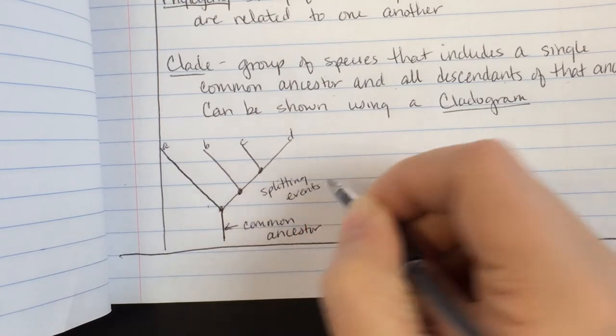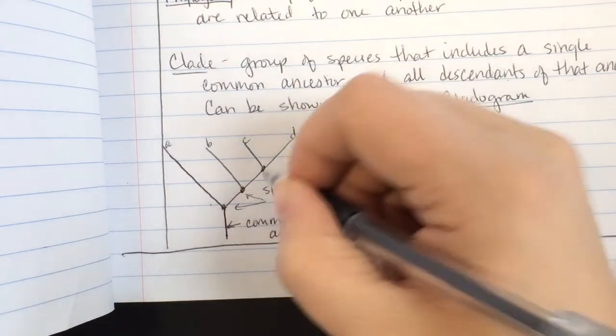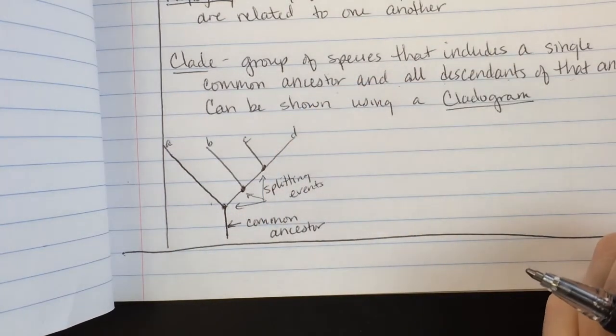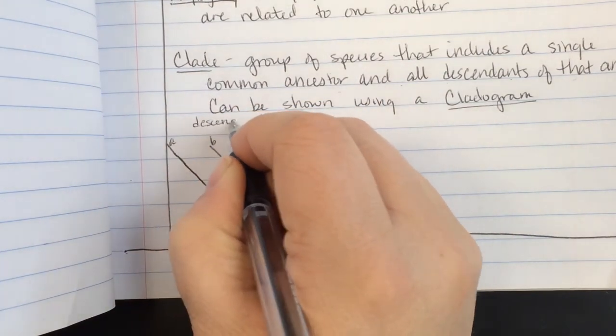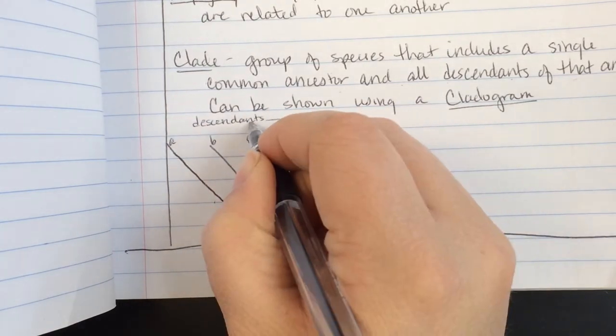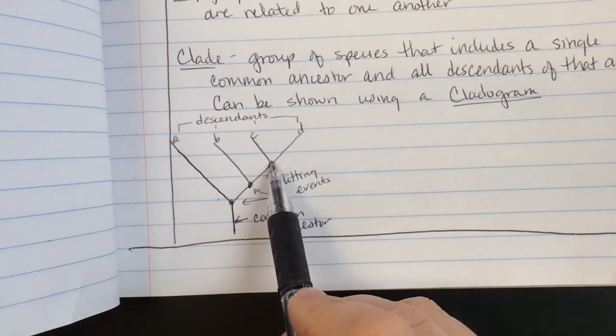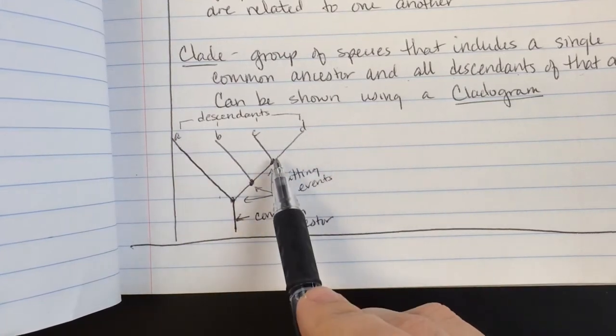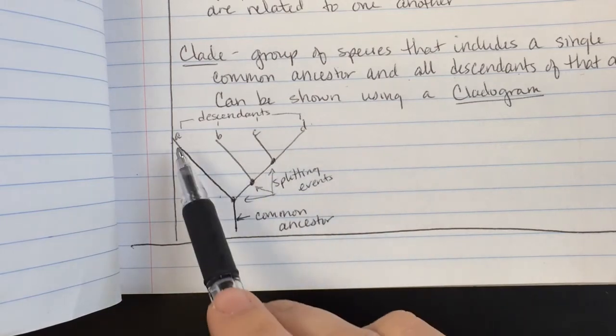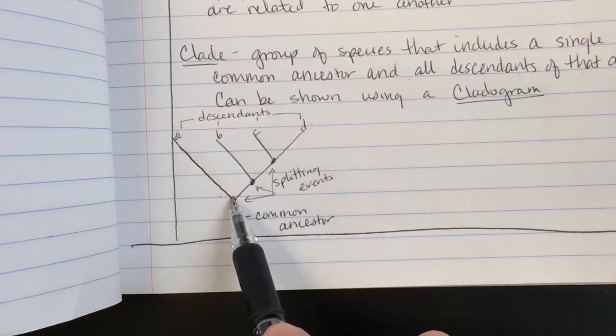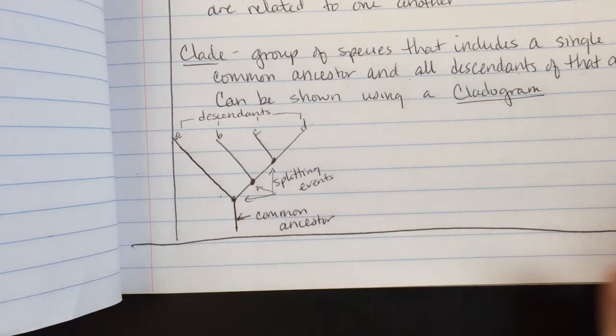And then you have, at these little nodes right here, we usually refer to them as splitting events. So something happened, a mutation that ended up being some sort of advantage to that creature in whichever habitat it happened to be in that caused a little bit of differentiation to happen. We would have referred to all these guys up here as descendants of that common ancestor. And so, if you want to look at how closely they're related, you look at how closely they split off. So in this particular tree, C and D are most closely related. Whereas A and D are least related because they're further apart. Where they meet up is way back towards the common ancestor. And as we get closer and closer, we get the closer relationships.